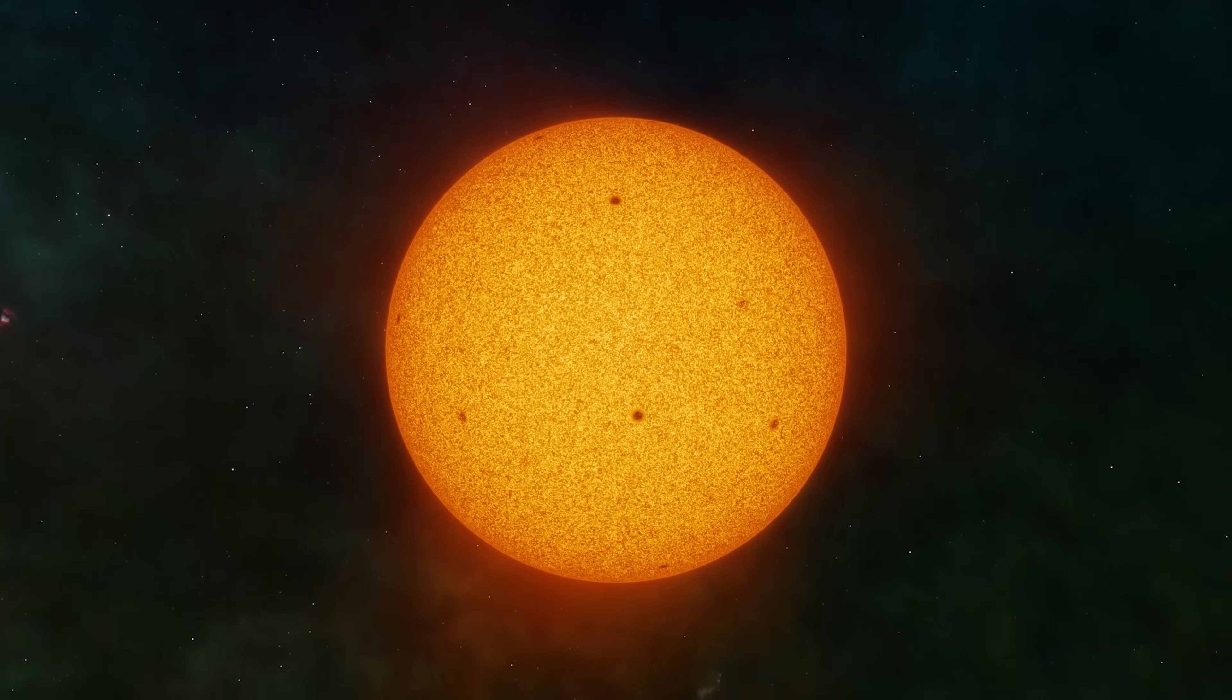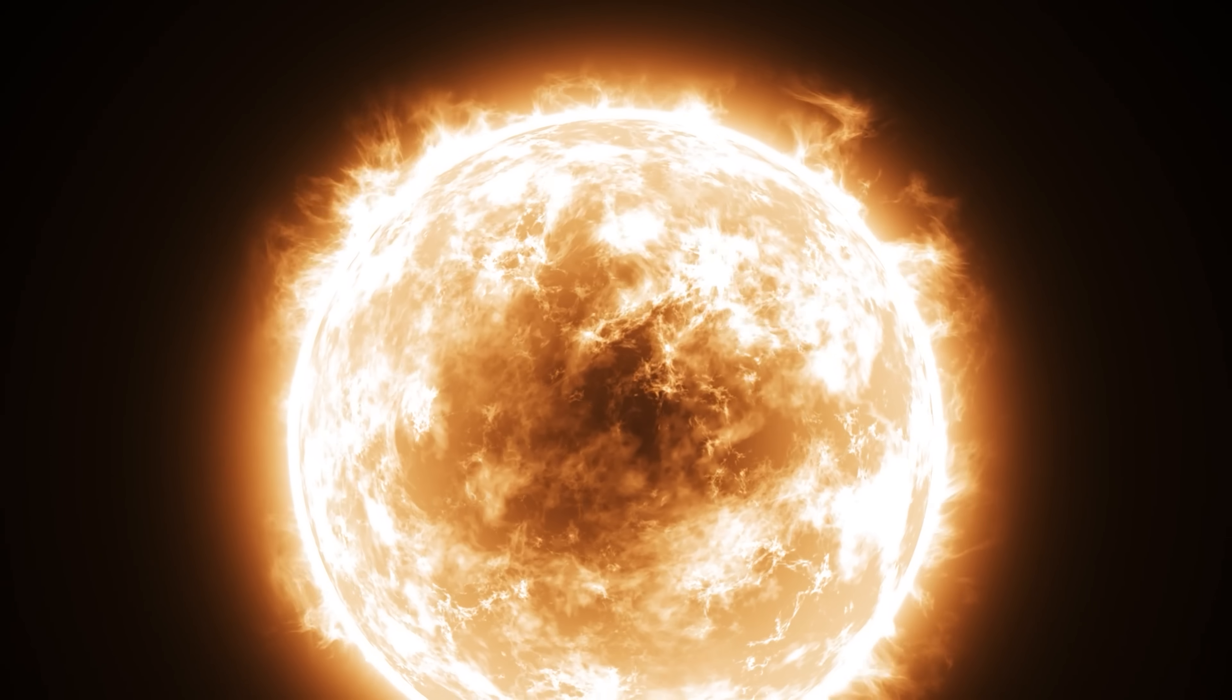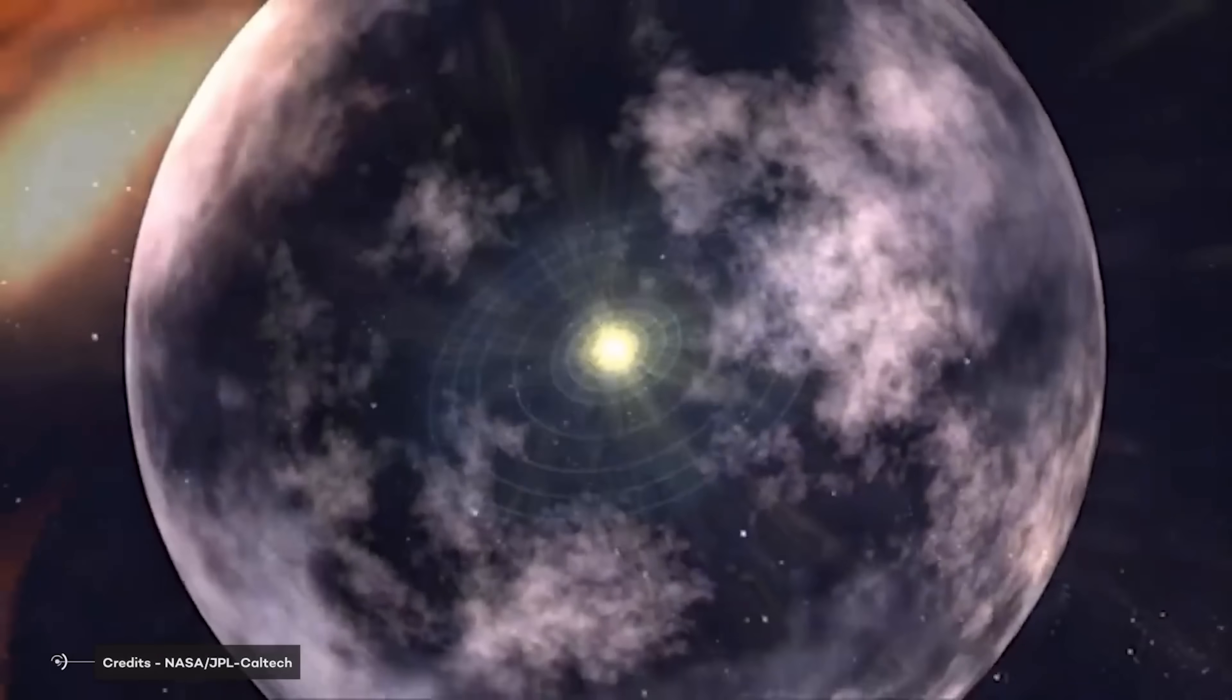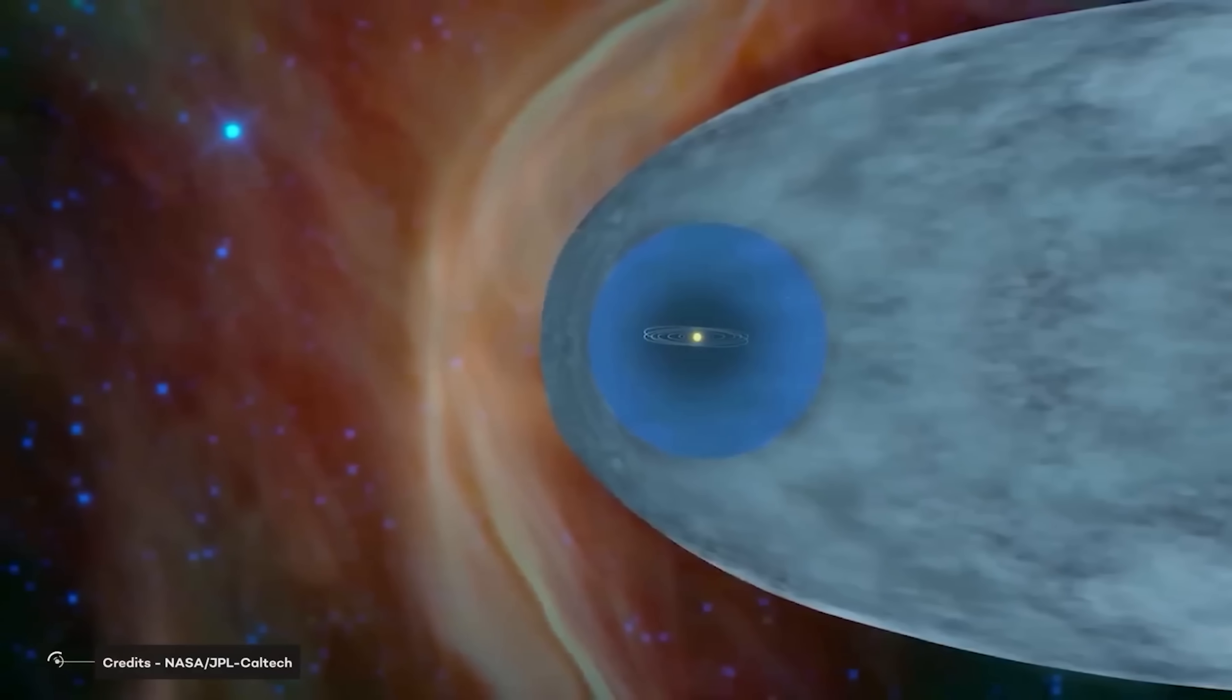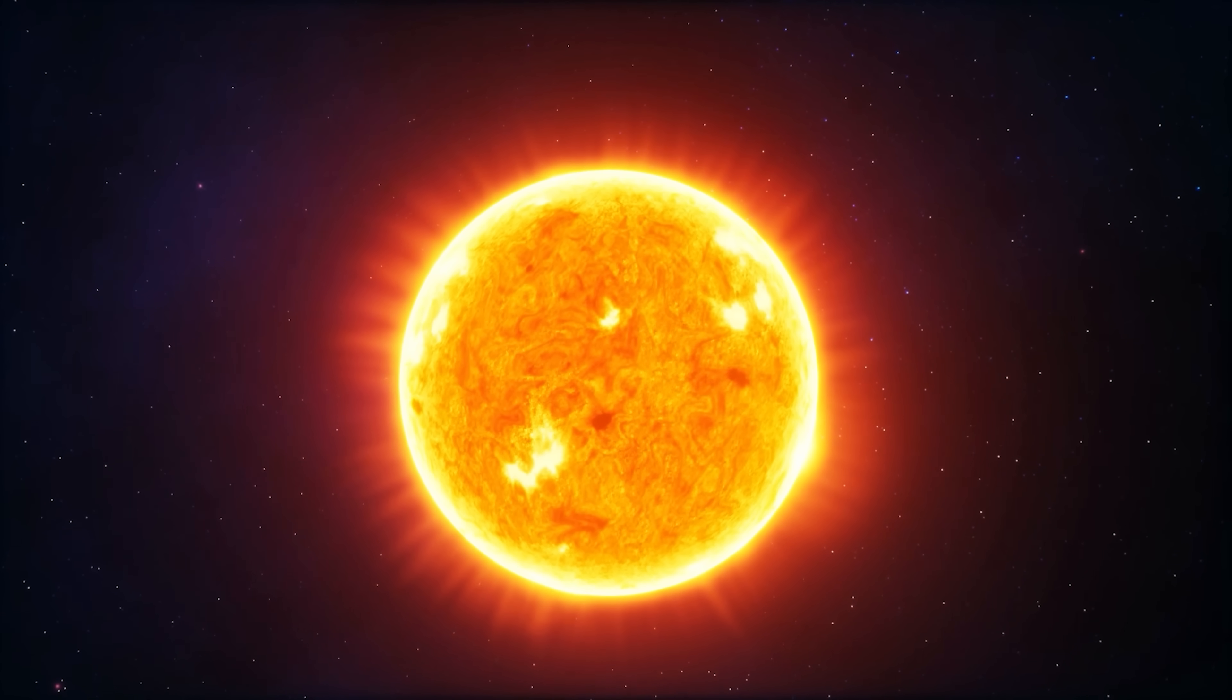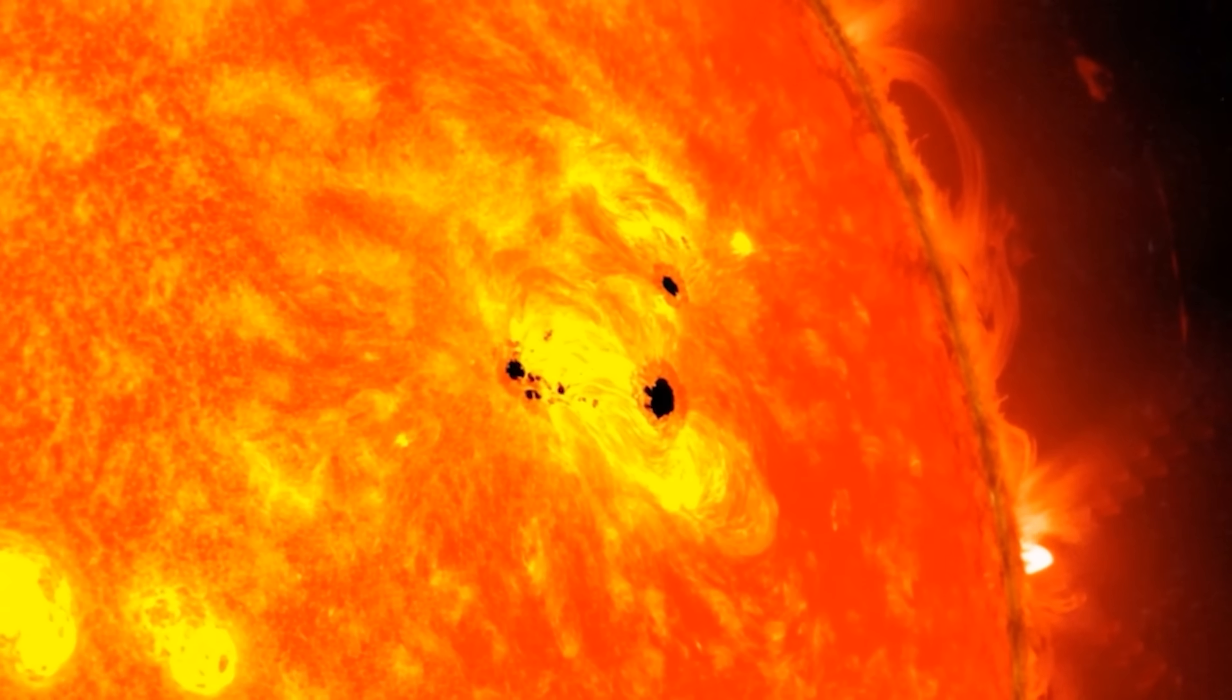Solar rotation isn't just an academic curiosity. It has important effects on the entire solar system. The movement of solar plasma generates the Sun's magnetic field through a process called the solar dynamo. This magnetic field extends into space, forming the heliosphere, a gigantic magnetic bubble that encloses the entire solar system and protects us from some cosmic radiation. The Sun's differential rotation is also responsible for the 11-year sunspot cycle. Magnetic field lines get twisted due to different rotation speeds, periodically creating unstable configurations that result in sunspots, flares, and magnetic storms.